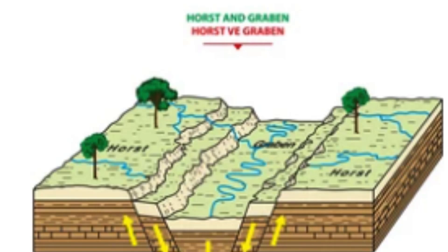When two normal faults occur on either side of a block of land, the block can be uplifted to form a Horst, while the areas on either side of the faults will drop down to form Grabens. In mountainous regions, Horsts and Grabens can form as a result of compressional forces rather than tensional forces. In these regions, the earth's crust is compressed and folded, leading to the formation of large mountain ranges. Within these ranges, Horsts can form as uplifted blocks of rock, while Grabens can form as sunken valleys between the mountain ranges.